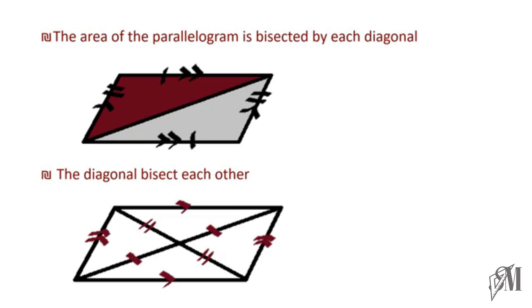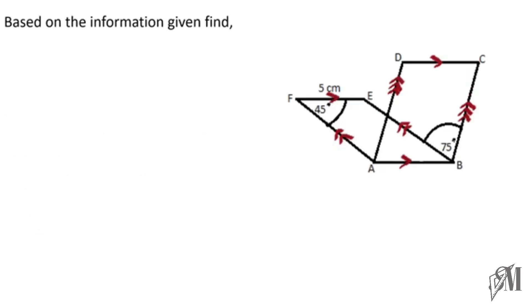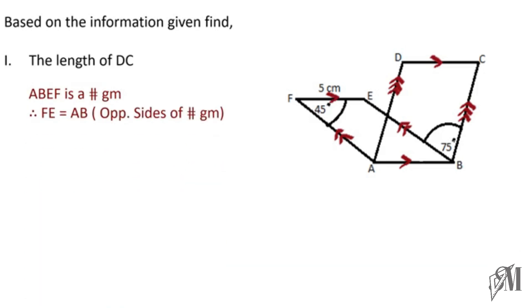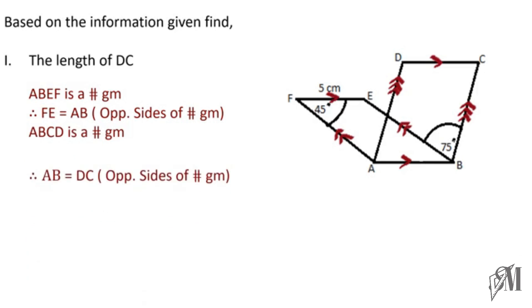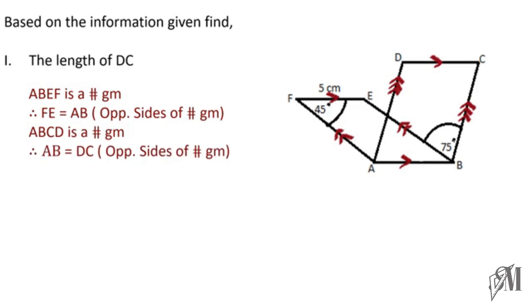Now we're going to apply these properties to some questions. We have to find the length of DC. We know ABEF is a parallelogram, so FE is equal to AB because they are opposite sides. Similarly, in parallelogram ABCD, AB and DC are equal because they are opposite sides. Since AB equals FE and AB equals DC, we can write FE equals DC. Since FE is 5 centimeters, DC is also 5 centimeters.